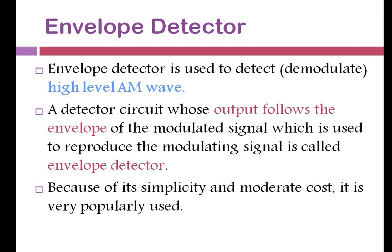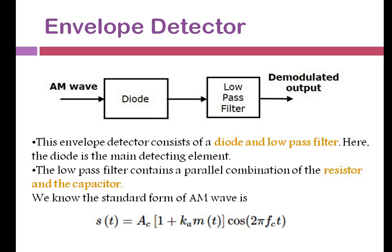The block diagram of the envelope detector: again, you have two devices. The input is the amplitude modulated signal, given to a diode — here we use a diode which acts like an on-off switch. After passing through the diode, we pass it through a low pass filter to get the demodulated output — the original message signal. The low pass filter contains a parallel combination of an RC circuit. The standard AM wave input is: Ac(1 + Ka·m(t))·cos(2πfc·t), which is given to the diode.